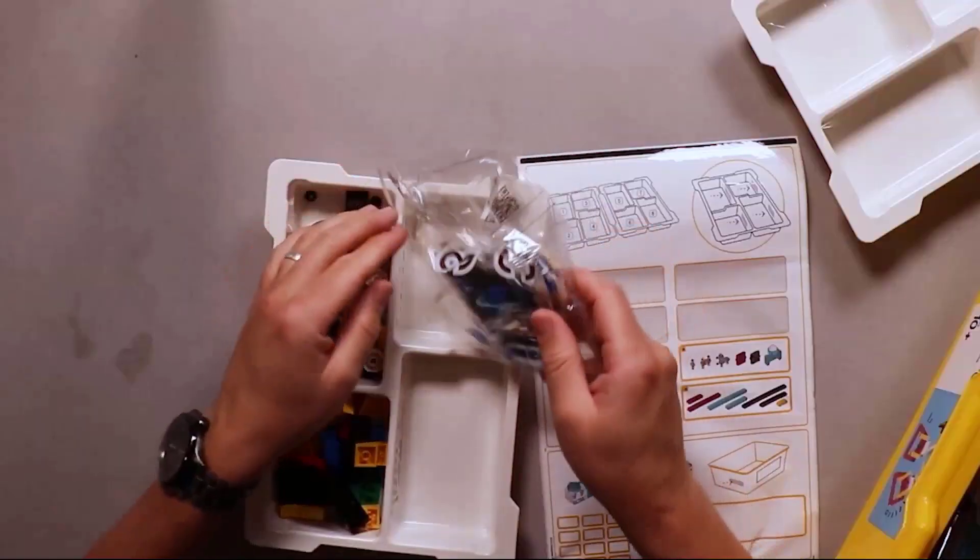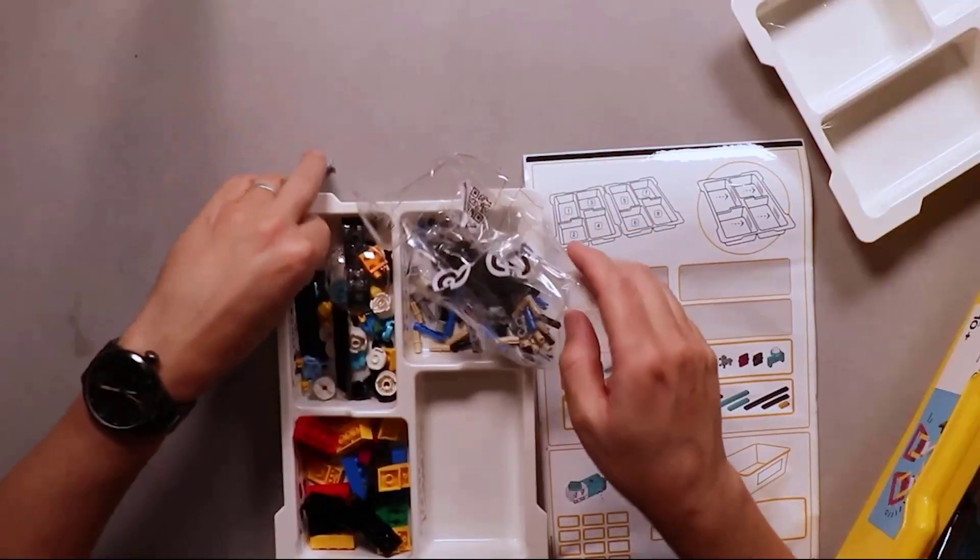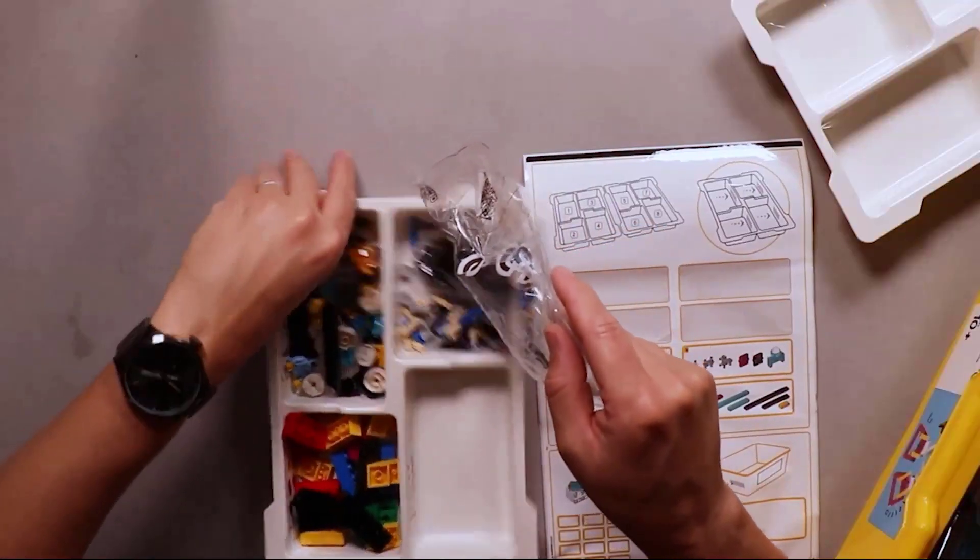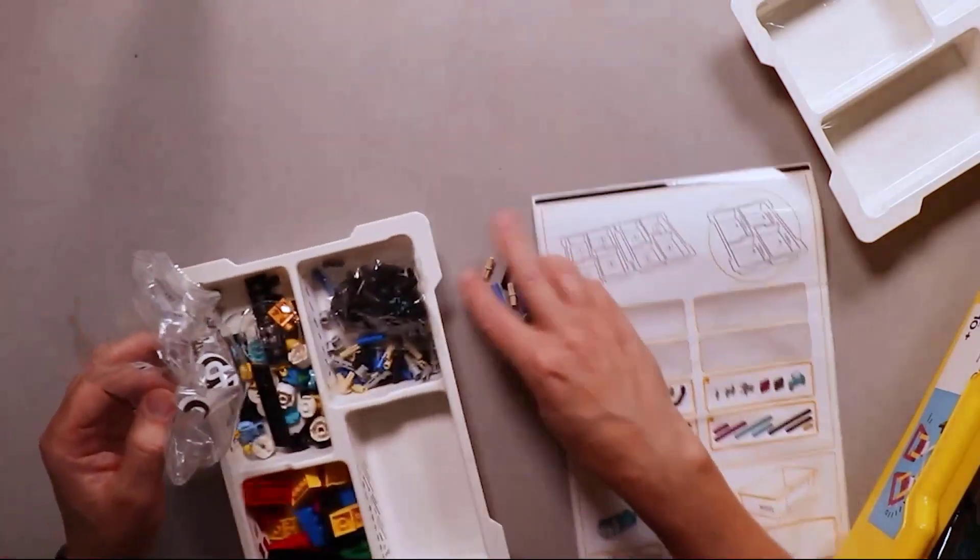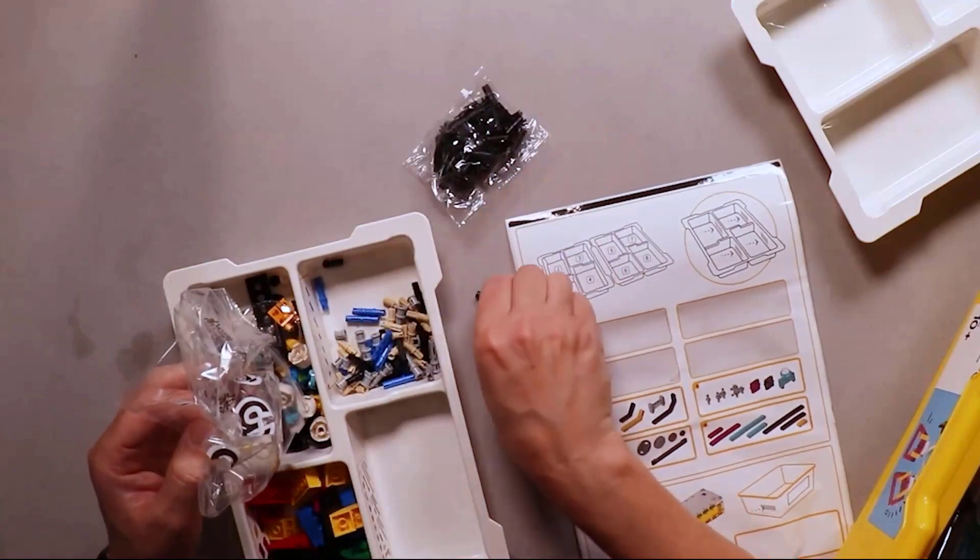Bag two is going to contain our colored bricks ready to pour in. Next up is bag three. This contains lots of Lego Technic connector pieces. These teeny tiny pieces are some of the most common pieces that you're going to use.